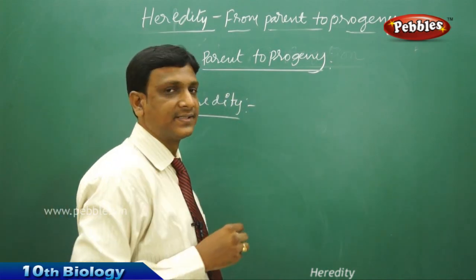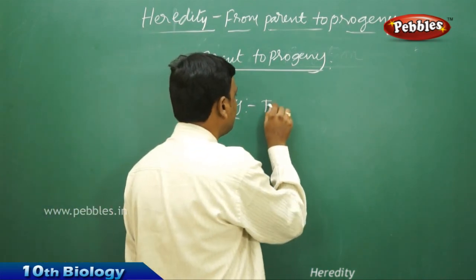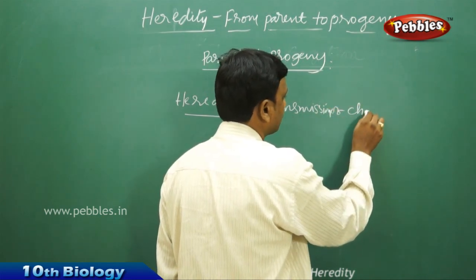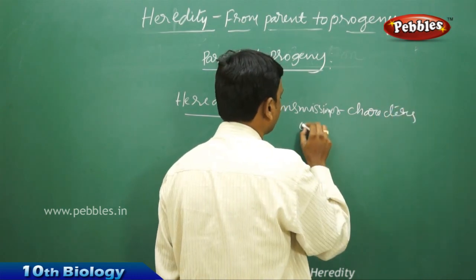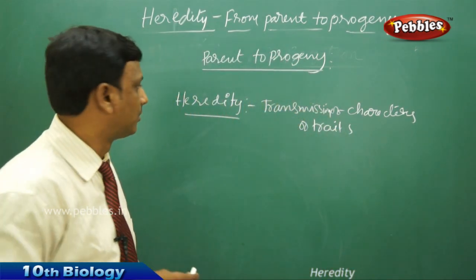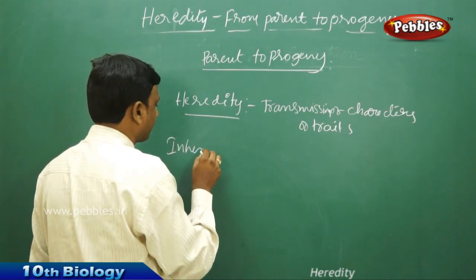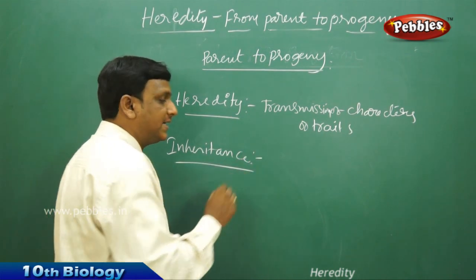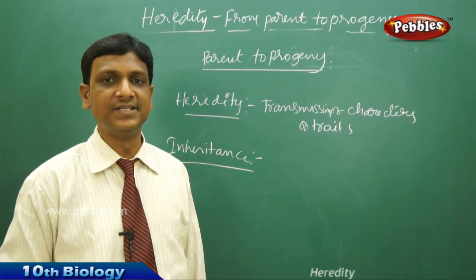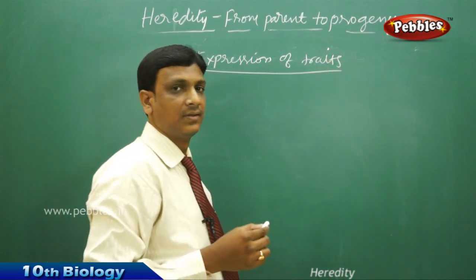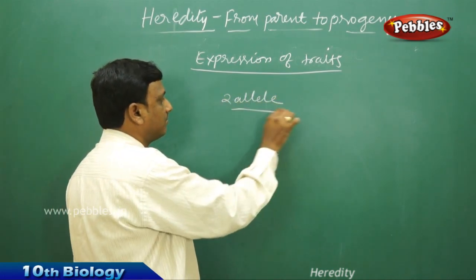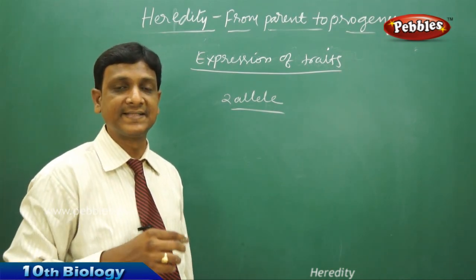What is heredity? Heredity is the transmission of characters or traits from parents to the offspring. What is inheritance? Inheritance is the process in which the transfer of traits takes place from generation to generation. Regarding expression of traits, Mendel stated that each trait is expressed by two alleles or two factors, but they did not know what these two factors are or physically where they reside inside the cell.